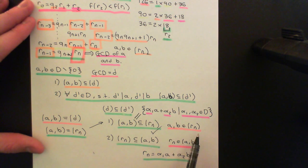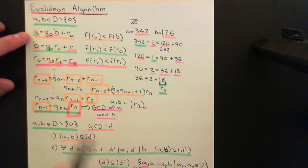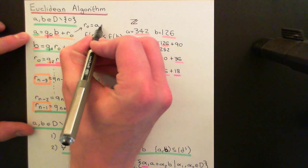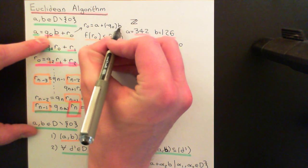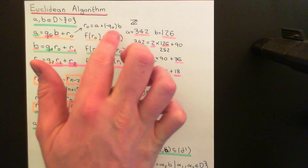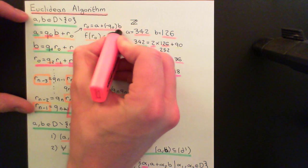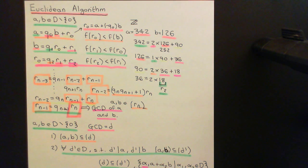To prove statement 1, I went up the Euclidean algorithm. To prove statement 2, I go down. Starting at the top: rearranging the first line gives R0 = A + (−Q0)·B, which is 1·A plus (−Q0)·B — a combination of A and B. So R0 is in the ideal generated by A and B.